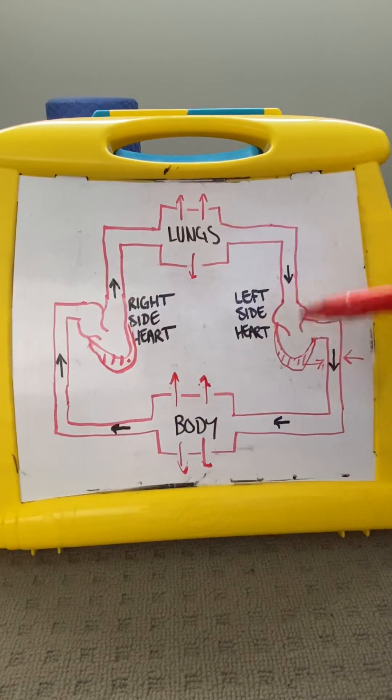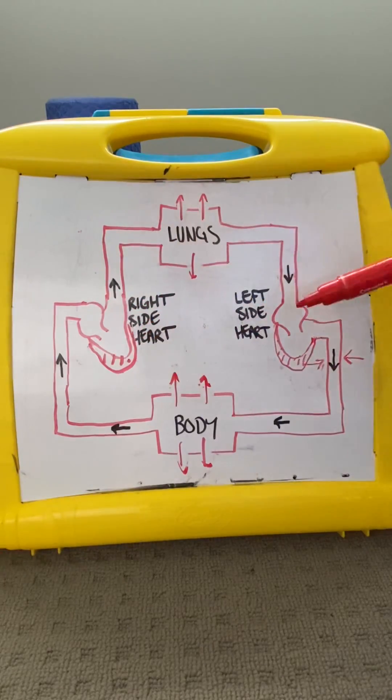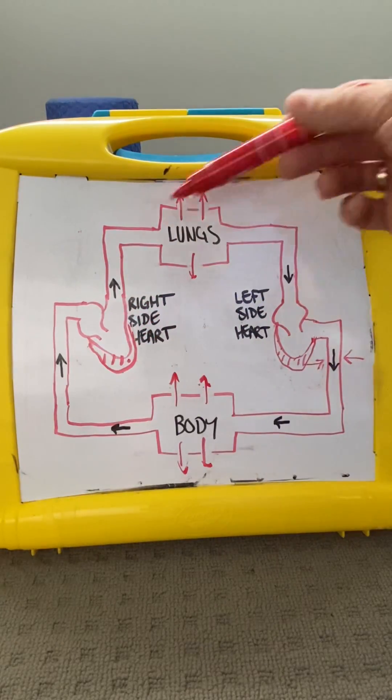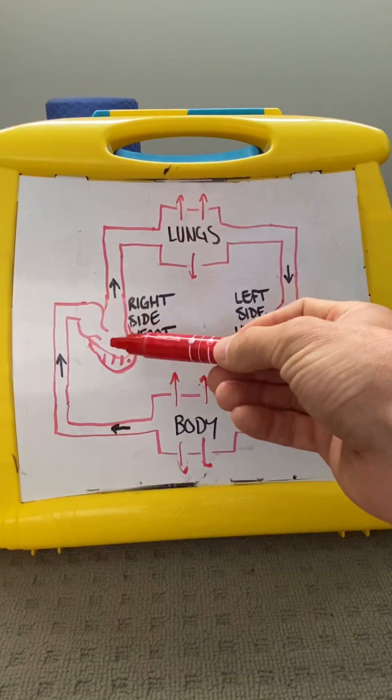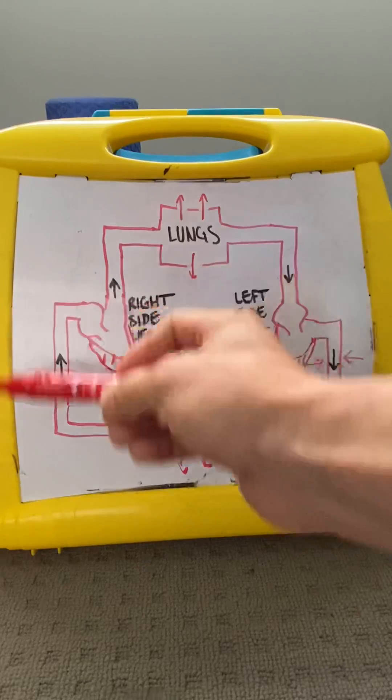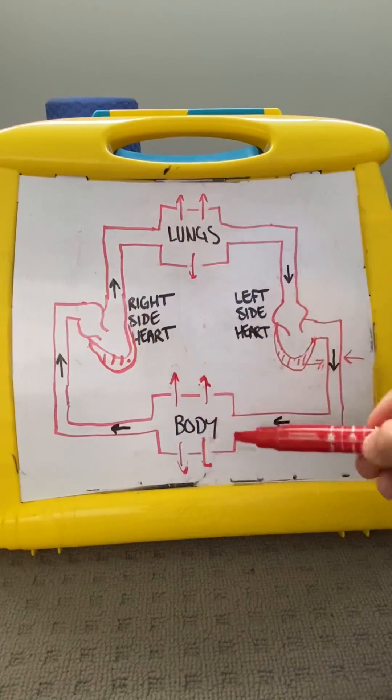So left hand heart failure can result in right side heart failure. Left side heart failure can result in pulmonary hypertension and pulmonary edema and right side heart failure can lead to systemic venous hypertension and systemic edema.